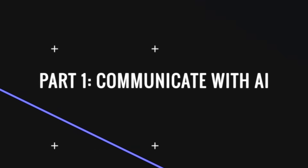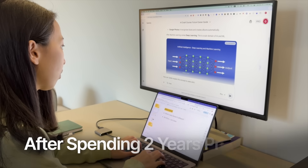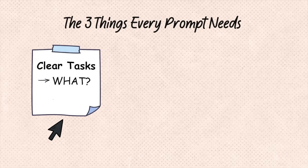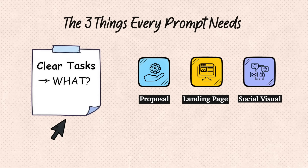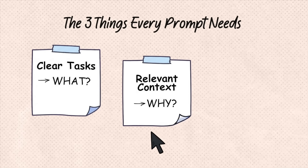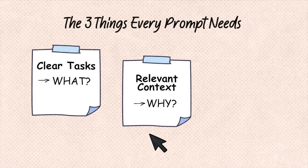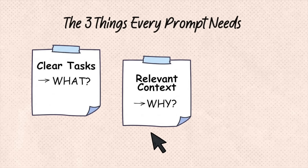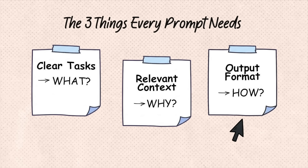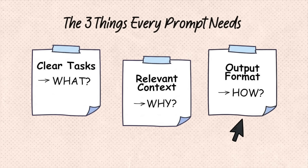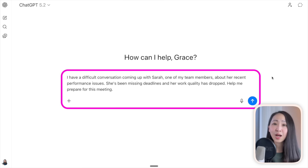The first part is learning how to communicate with AI, and communication starts with effective prompting. After spending two years prompting AI every day, the most critical components for effective prompts are these three: clear tasks — the 'what,' exactly what do you want, is it a proposal, a landing page, a social visual? Relevant context — the 'why,' the background details AI needs to understand your situation. Output format — the 'how,' what a good output should look like: a table, a Word document, bullet points.